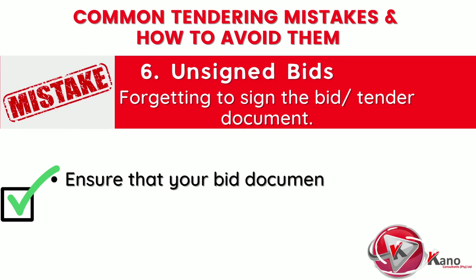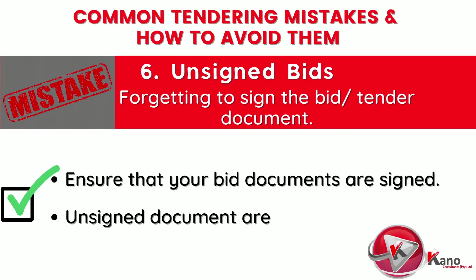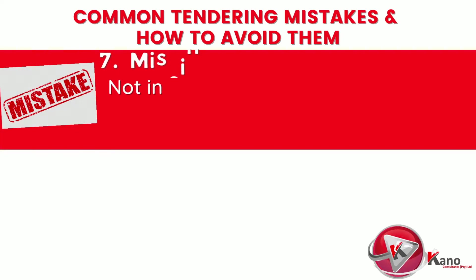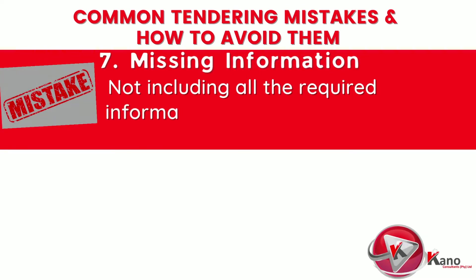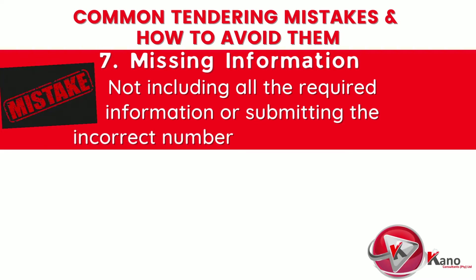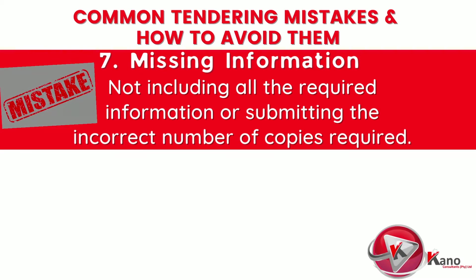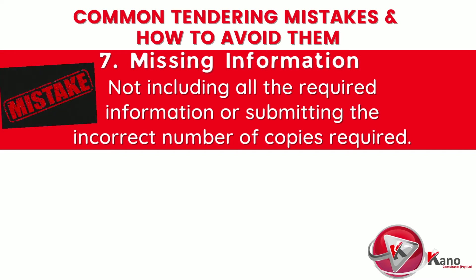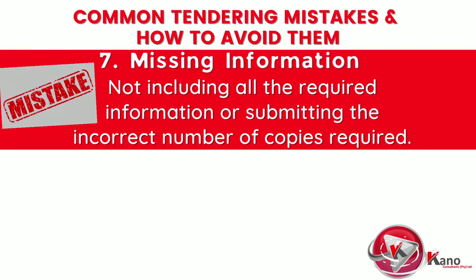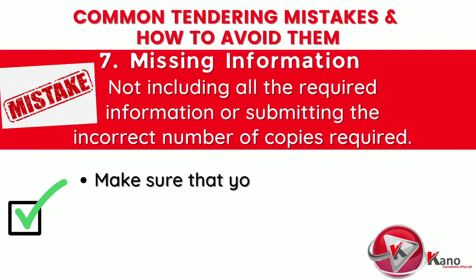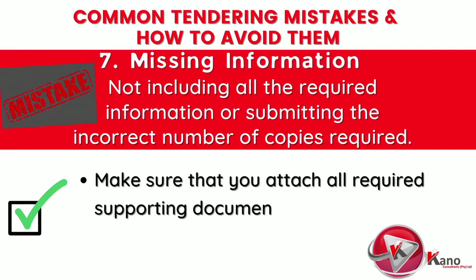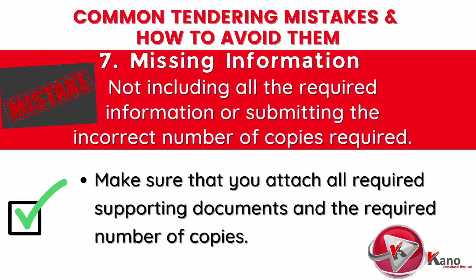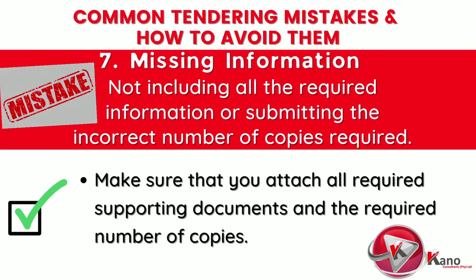Another typical mistake is forgetting to sign bid documents. Make sure you sign on every provided space — unsigned documents are usually eliminated during the pre-evaluation stage. It is also important not to omit required information or fail to submit the correct number of copies. If something is missing, it cannot be evaluated. While government institutions may sometimes allow tenderers to submit missing information, in most cases this second chance will not be provided. Make sure you attach all required supporting documents and the required number of copies.